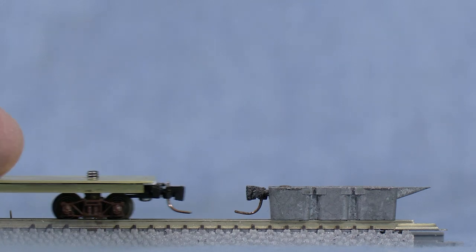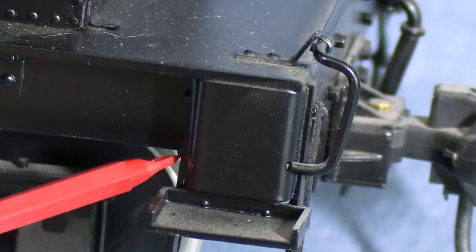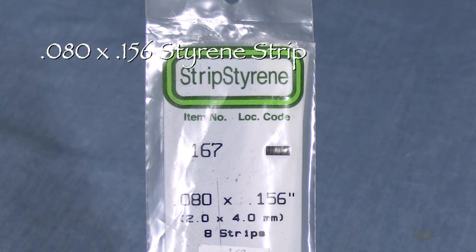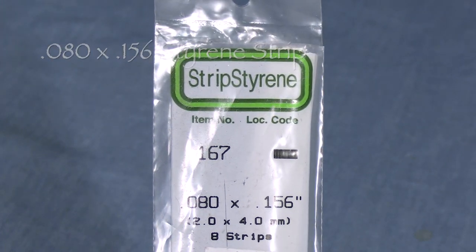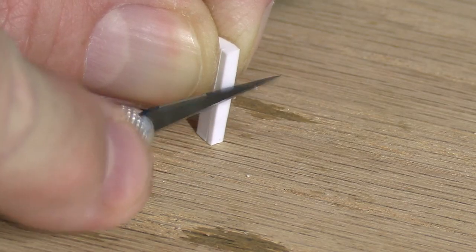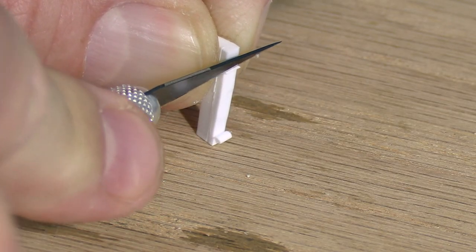On my large-scale model, the end beams stick down a little below the frame. I found some 80,000 x 156 styrene strips in my stash of materials. These are a little big, but if I cut them down, they could work for the end beams. 80,000 square stock would be better, but I don't have any of that.